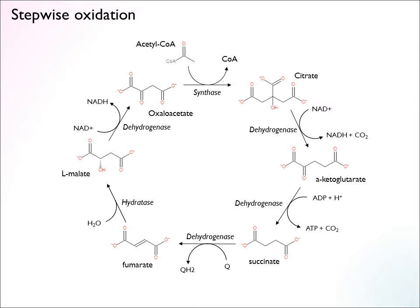This happens at isocitrate dehydrogenase in the first steps — skipping a couple of isomerization steps to simplify things a little bit. In this step, we get alpha-ketoglutarate, which is a five-carbon compound. So now we have lost one CO2.